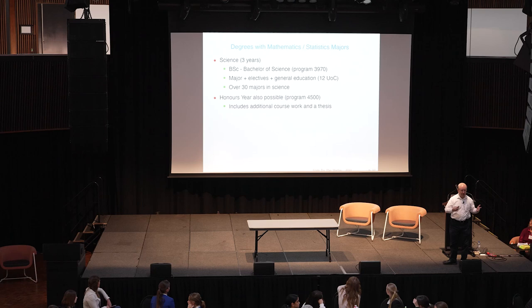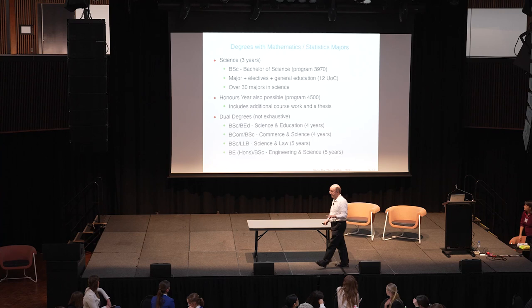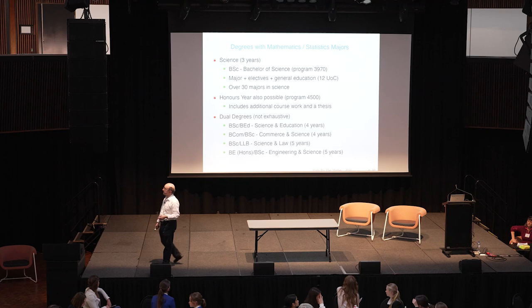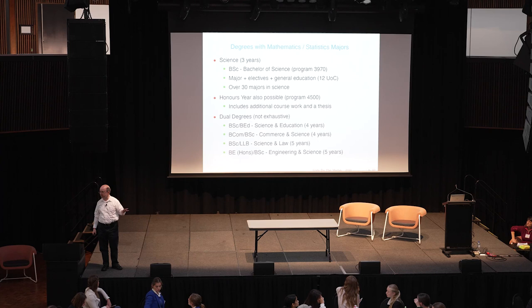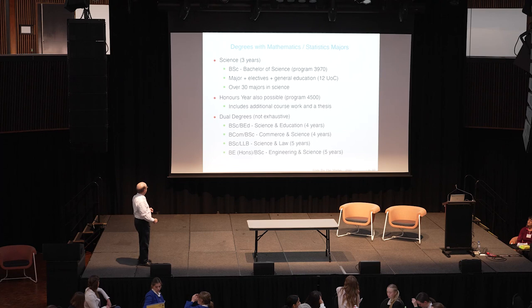Here are a few dual degrees — not exhaustive. BSc/BEd is what you do if you want to be a high school maths or science teacher. BCom/BSc is commerce and science. BSc/LLB is science and law. BE/BSc is engineering and science — actually a five-year degree because the Bachelor of Engineering automatically includes honours here at UNSW. The BEd and the LLB are different kinds of degrees that you can only do as part of a pair, not on their own.